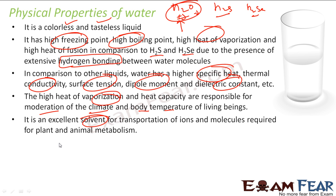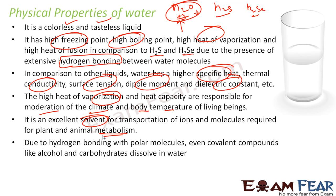Water is a very good solvent and it is also required for metabolism in the human body. We need to drink water because all the metabolic activities in the body consume water. And because of hydrogen bonding with polar molecules, even some covalent compounds like alcohol and carbohydrates can dissolve in water. So it is a universal solvent — ionic compounds anyway dissolve in water, and some covalent compounds also dissolve because of hydrogen bonding.